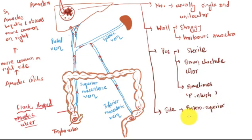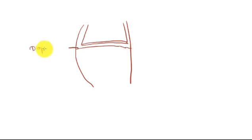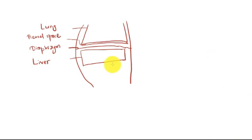Talking about the site, it is present on the posterior superior segment of the right lobe of the liver. Here this is diaphragm, lung, pleural space, and here this is liver. Here we have right and left branches of portal vein and the abscess on the posterior superior aspect of the liver is in direct continuity with the right branch of the portal vein, thus making it the common site for the abscess.